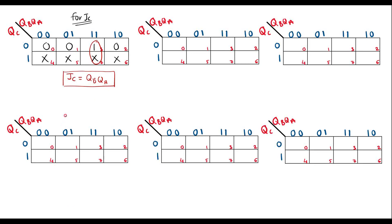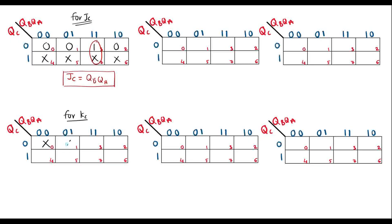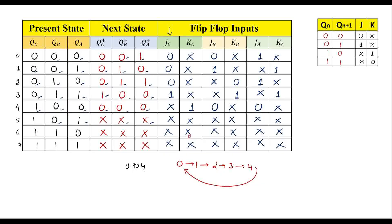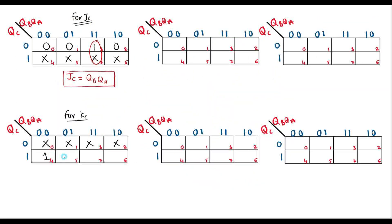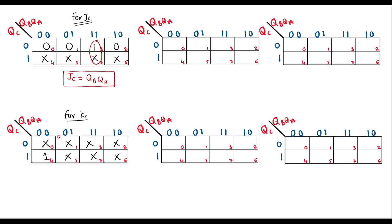Now for the K-map for KC: the inputs for the valid states are mostly don't cares, and we have a 1 combined with don't cares. We can make a group of all 8 cells together, so the value of KC equals 1.